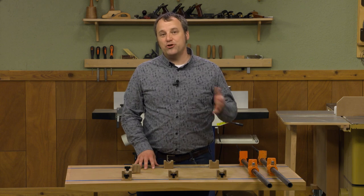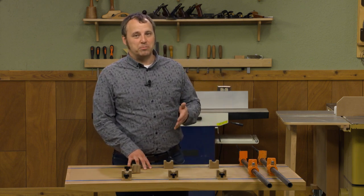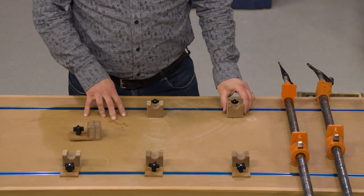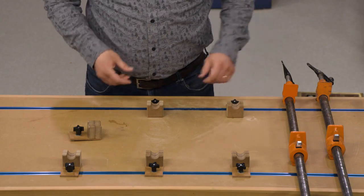But there's another use that you can get out of those t-track, and that's to create a glue up station making some cradles. Now if you use pipe clamps, you can follow along with what I'm working with here.